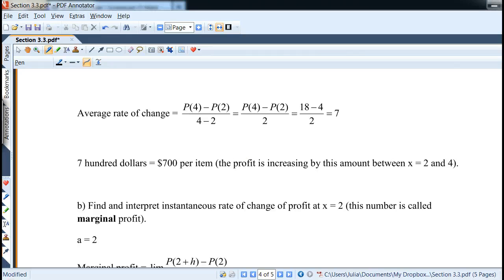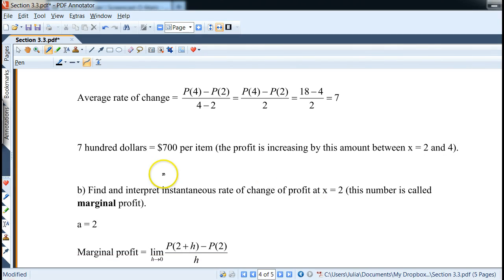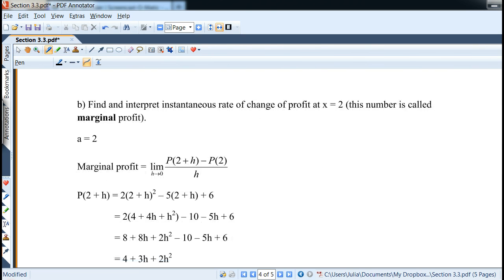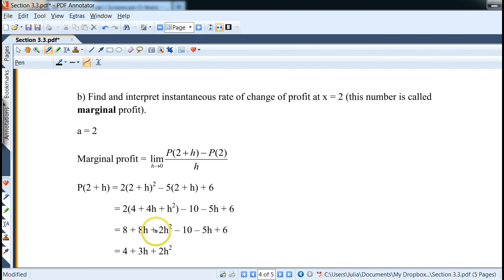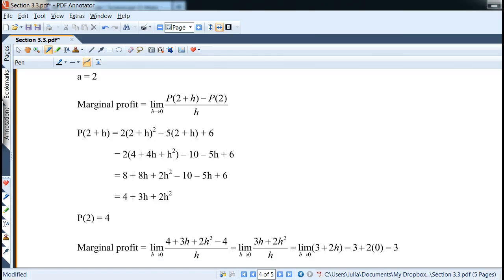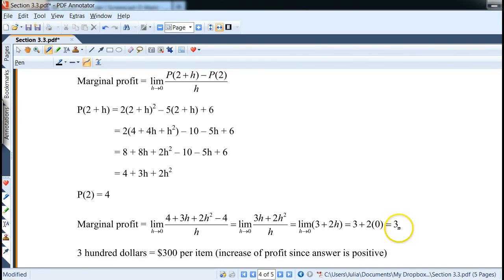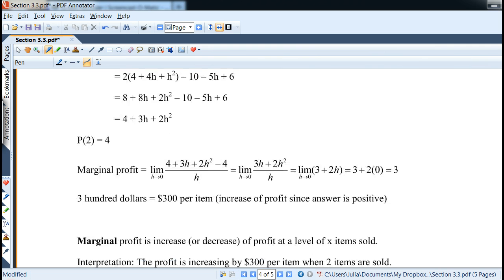Now we want to find instantaneous rate of change at x equals 2. This quantity is also called marginal profit. We'll use this word a lot, especially when we start doing derivatives. And again it's a equals 2. And so we set this up similarly. Notice how I use the p now. So we calculate it very similarly as before. I plug in the 2 plus h, again, you would expand it first and distribute it, and then collect like terms. So we end up with 4 plus 3h plus 2h squared, p(2) is 4, and we calculate it, and the answer would be positive 3, and which becomes $300 per item. It's still increasing, but not as fast at the level of 2 items.